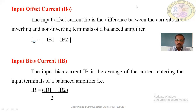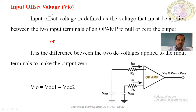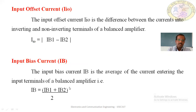In summary: input offset voltage VIO is in terms of voltage — VDC1 minus VDC2; input offset current IIO is in terms of current — IB1 minus IB2. These two parameters are analogous — one is the difference of voltages and the other is the difference of currents.